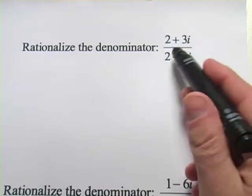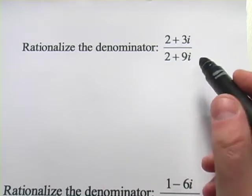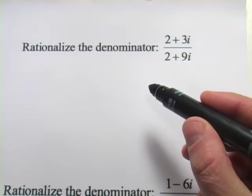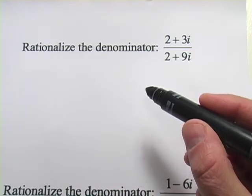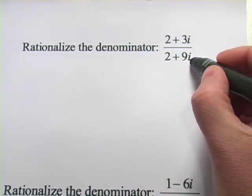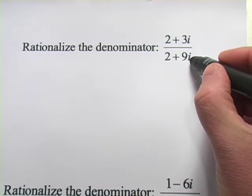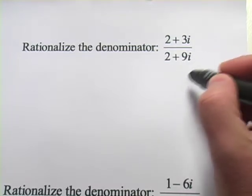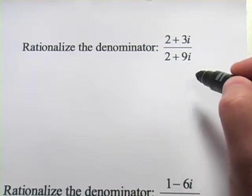In these problems, we have some fractions with complex numbers, and they're asking us to rationalize the denominator. We want to do this because this i is a square root, and we don't like those in the denominator, so we're always trying to get rid of those by rationalizing.